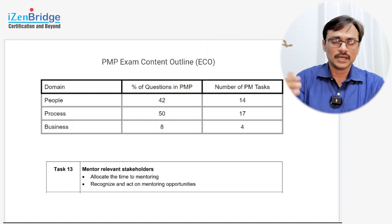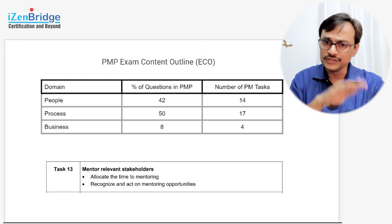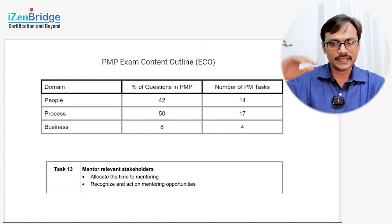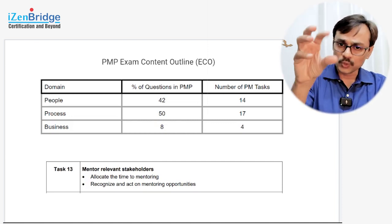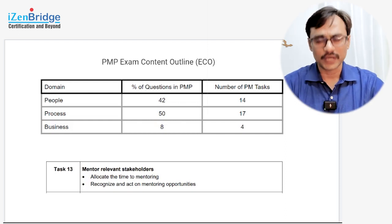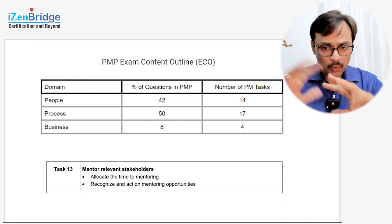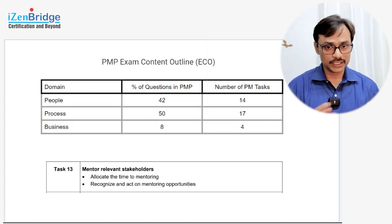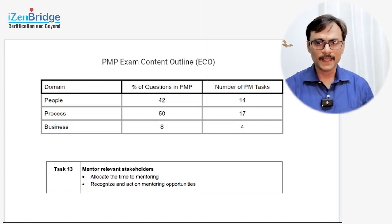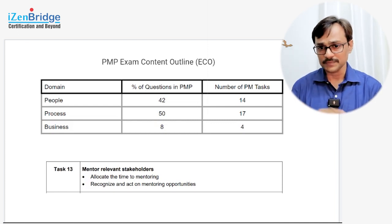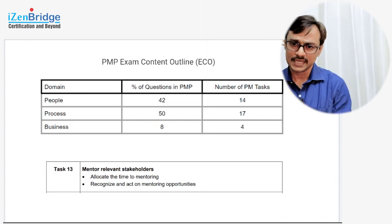The exam content outline has various tasks — this should be done, this should be done — and then the PMP exam tests you on those tasks by way of multiple choice or different types of questions. The whole content outline is divided into three areas called domains: people, process, and business. People has 14 tasks, process has 17, and business has four.